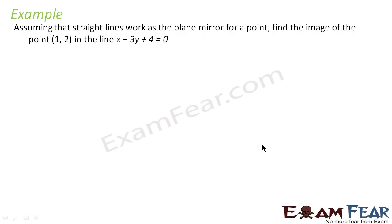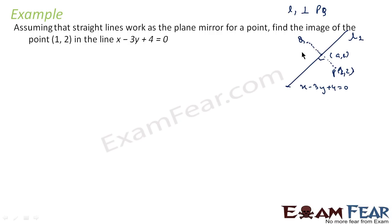We have a tricky question. It says that assuming a straight line works as a plane mirror, from a point find the image of point (1, 2) in the line x minus 3y plus 4 is equal to 0. We know point p. We can find the slope of line PQ because L1 is perpendicular to PQ. Using slope and one point we can find the equation of line PQ. We know the line PQ equation and L1 equation. The common point is r. We find r, we have p, and we can find q because q plus p by 2 is equal to r.